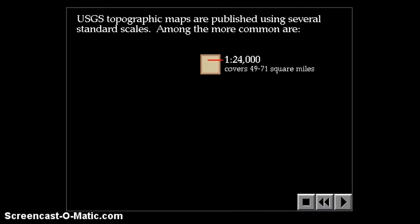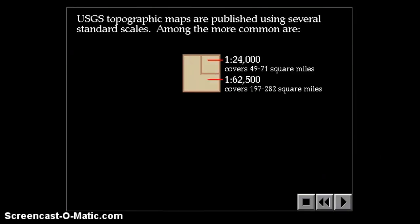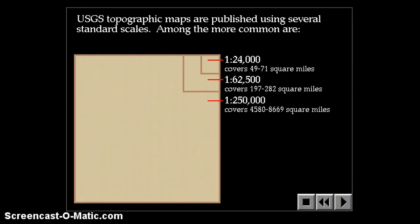USGS topographic maps are published using several standard scales. The 1 to 24,000 is probably the most common, and that's the one that we'll be using. But they do also make 1 to 62,500 and 1 to 250,000.